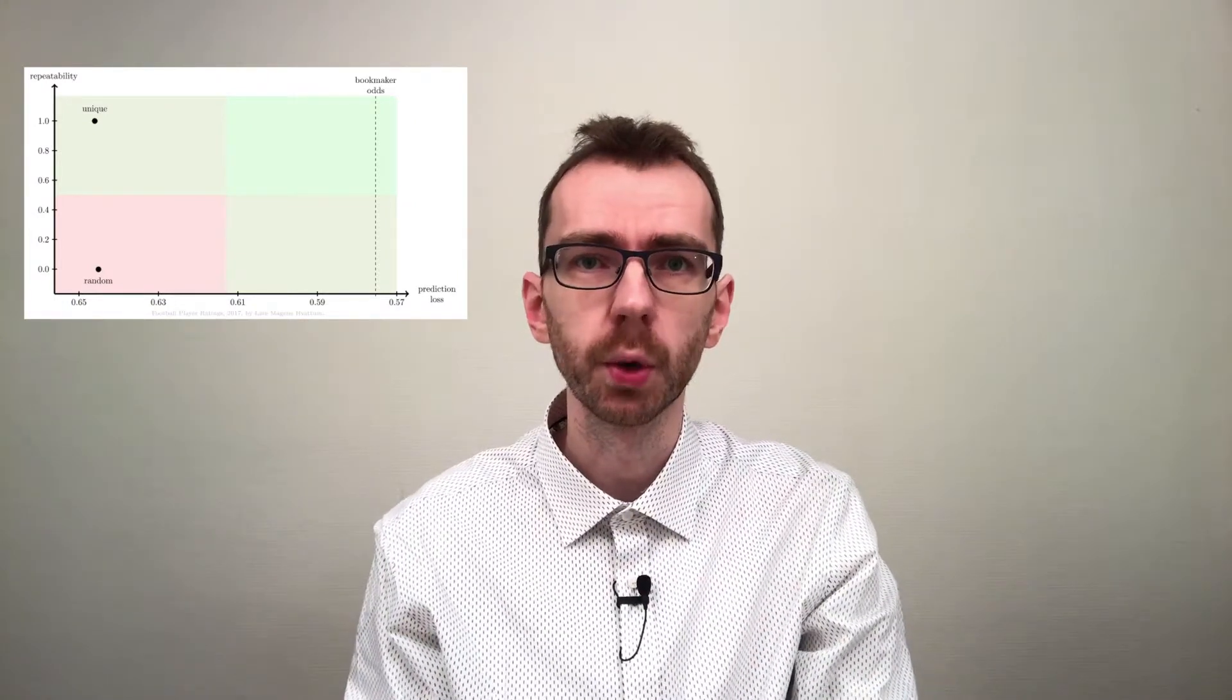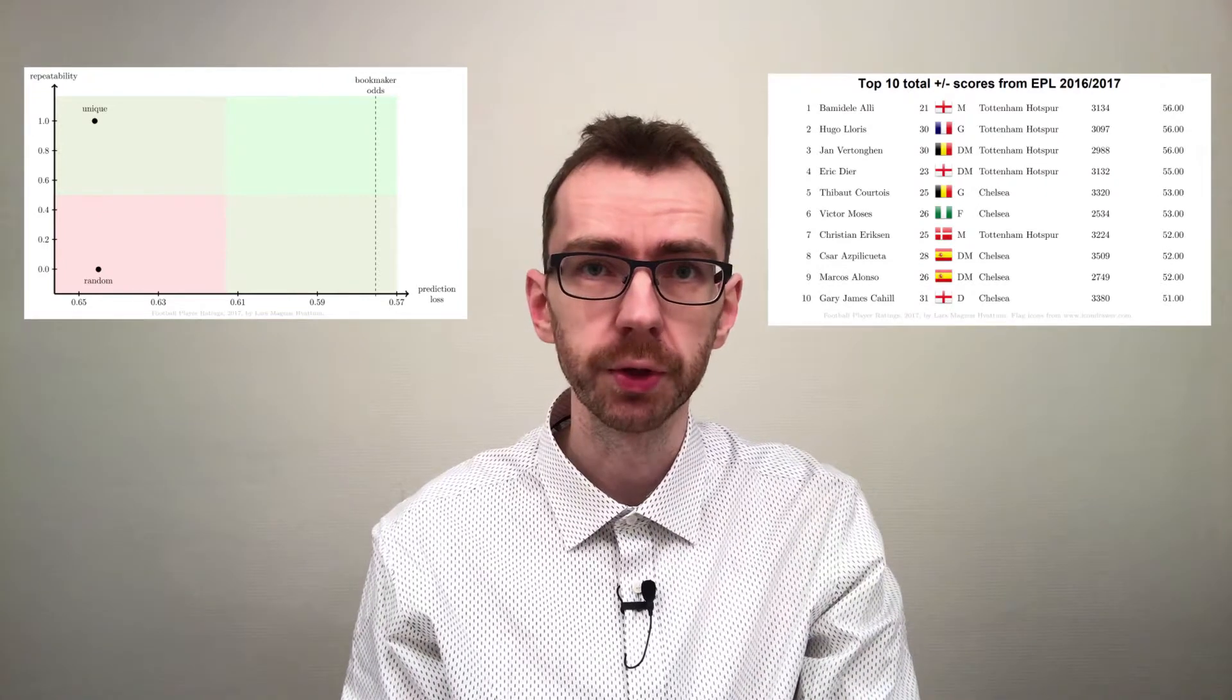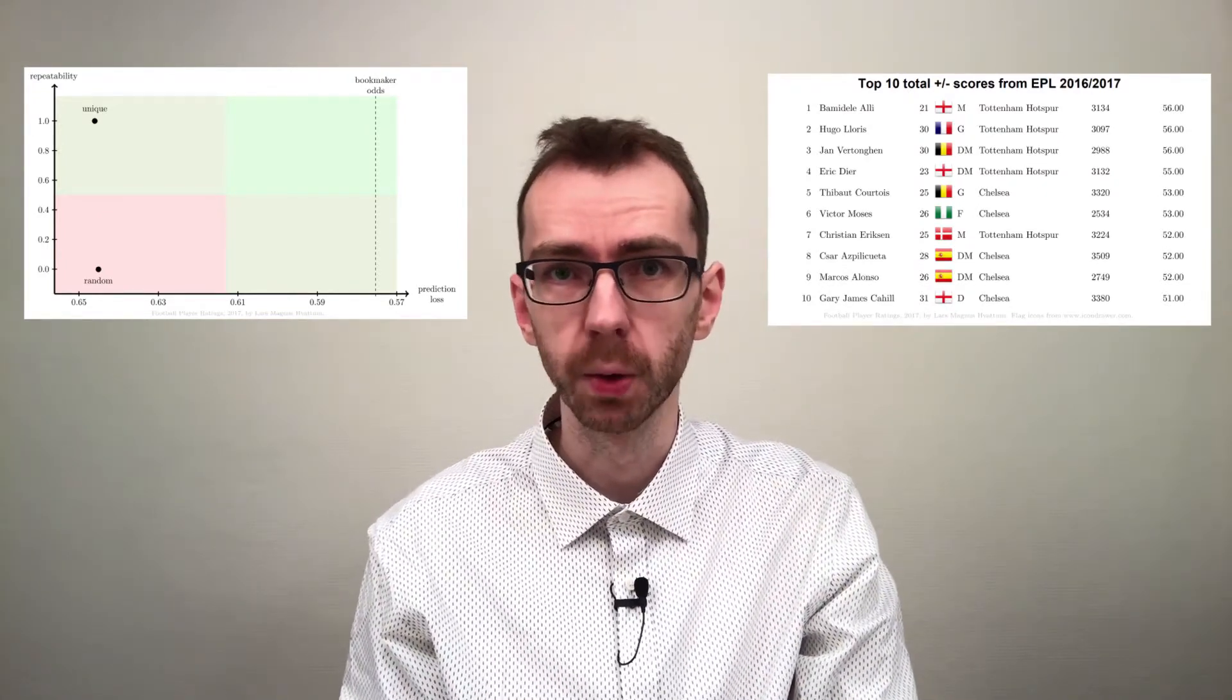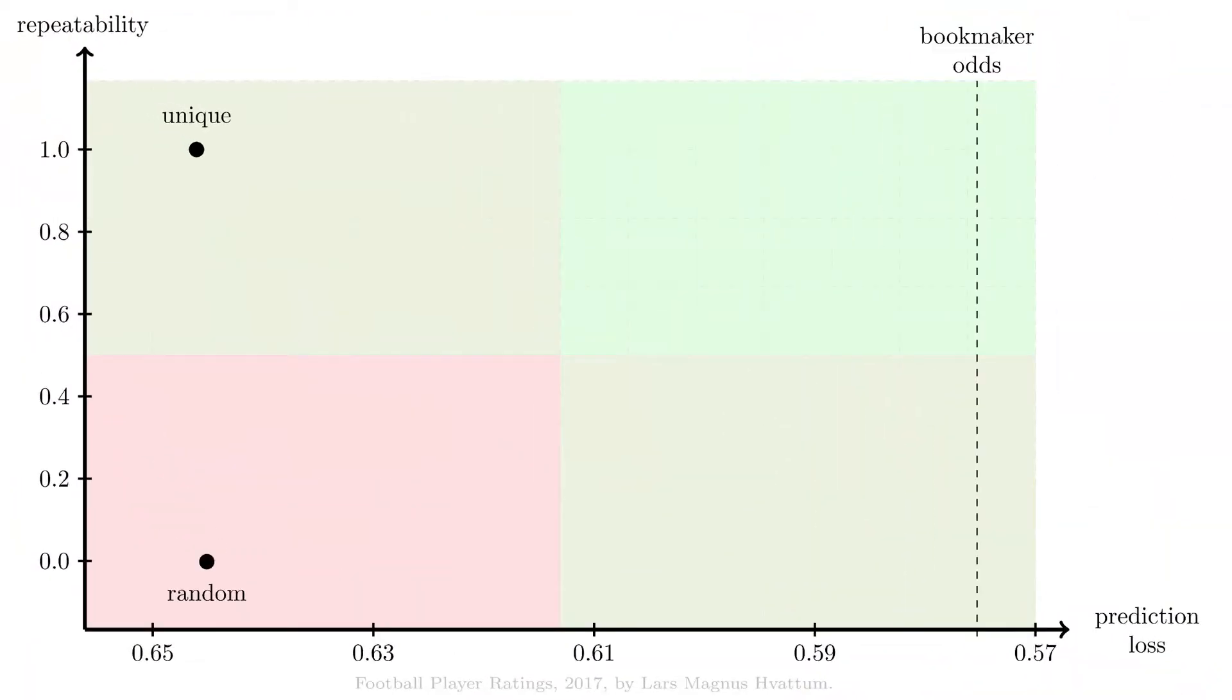The very first rating that we consider in our videos was the total plus minus rating, which basically is the sum of the goals scored minus the sum of the goals conceded from the perspective of a given player. It turns out that this gives us a repeatability measure of around 0.8 and the prediction loss of around 0.6.